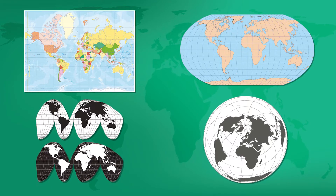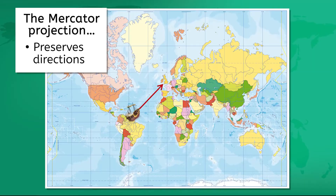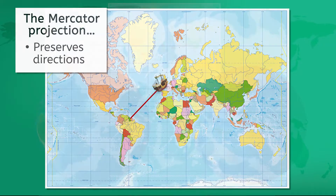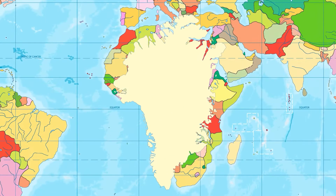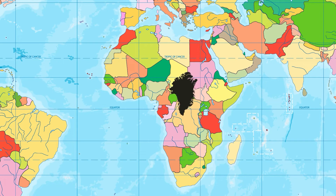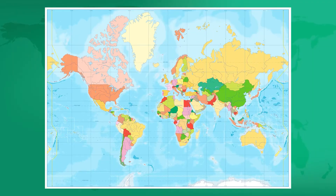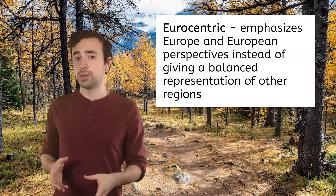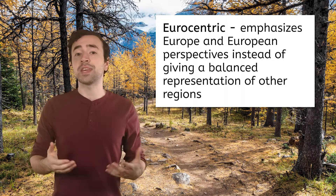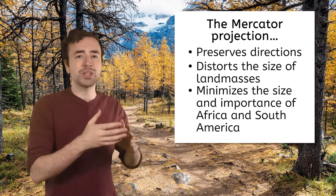There are many different map projections, but today we'll focus on two. Let's start with the Mercator projection — the most popular one. It accurately preserves directions between locations on Earth's surface, making it especially helpful for sailors and sea navigation. But check out Greenland and Africa. Greenland looks almost as big as Africa here, but in reality Africa is 14 times larger than Greenland. The Mercator projection distorts the size of land masses. Also, notice how Europe is placed right in the center. This projection has been criticized for presenting a Eurocentric view, emphasizing Europe instead of giving a balanced representation of other regions, and minimizing the size and perceived importance of regions like Africa and South America.